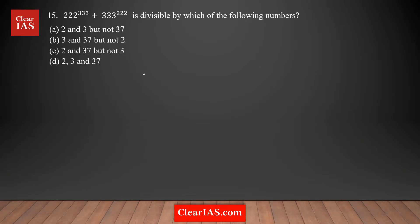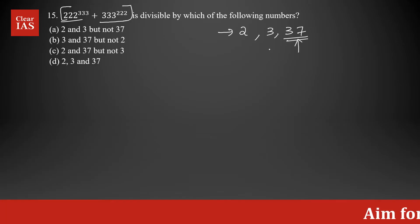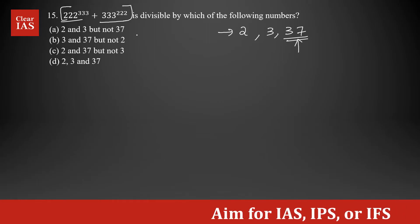Let's analyze question number 15, which is based on divisibility rules. We have the sum of two numbers and need to check which of the answer choices it's divisible by. The answer choices are combinations of 2, 3, and 37. We're going to check divisibility by 2 first, then 3. For 33, there's no particular divisibility rule, so we'll see how it goes.